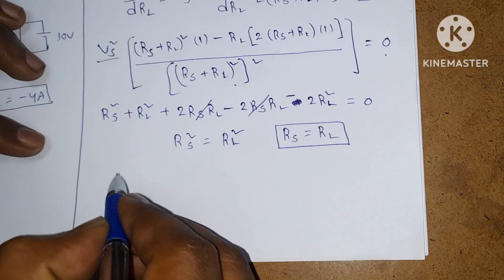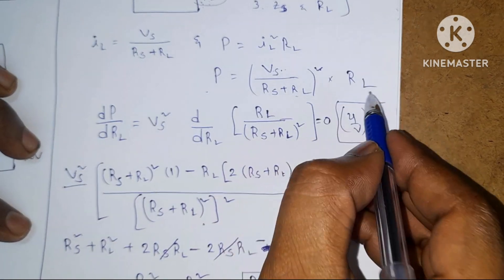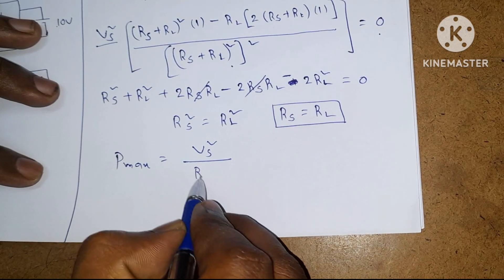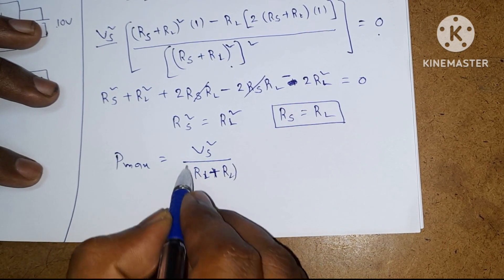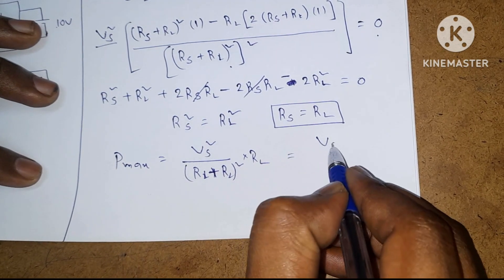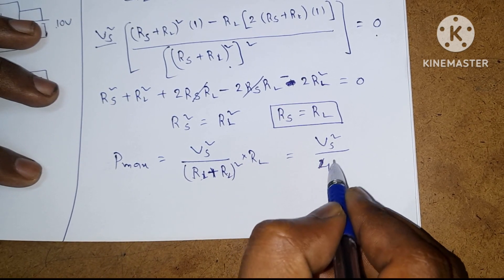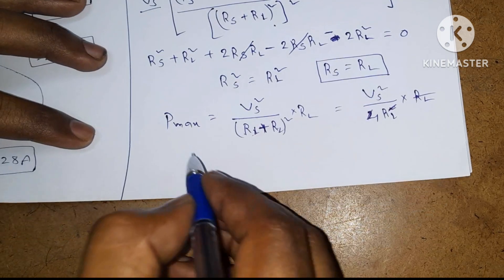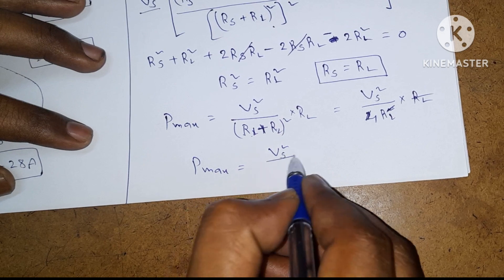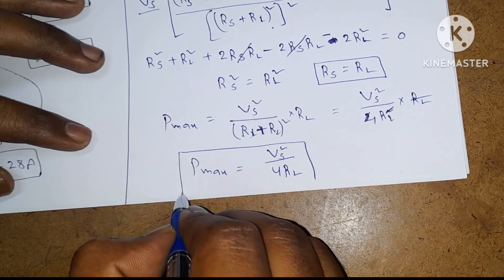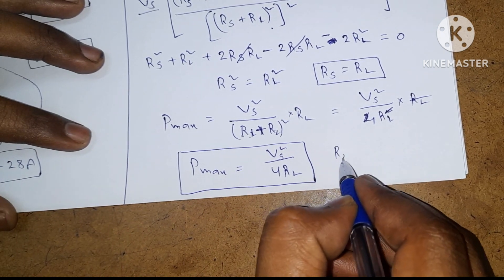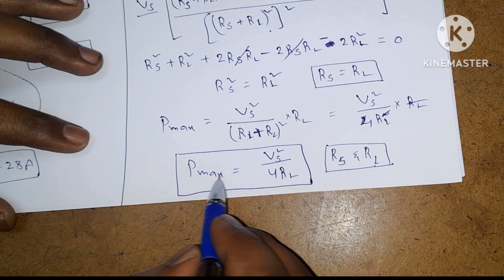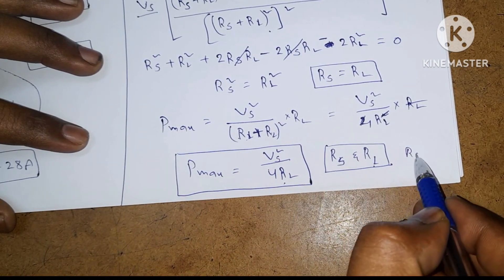Now, what is the maximum power? Substituting Rs = Rl into the power equation: Pmax = Vs² / (Rl + Rl)² × Rl = Vs² / (4Rl² ) × Rl. The Rl terms cancel, giving Pmax = Vs² / 4Rl. So when both source and load are pure resistors, maximum power transferred to load is Vs² / 4Rl, with the condition Rs = Rl.